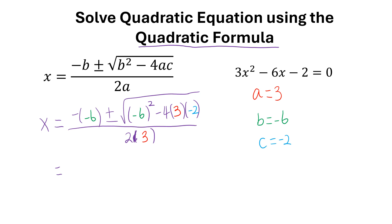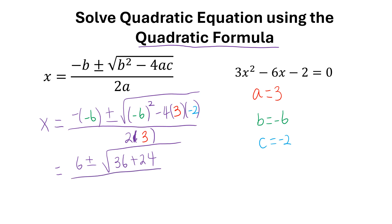Now I'm going to simplify this equation. Negative negative 6 is the same thing as positive 6, plus or minus square root of negative 6 squared, that's positive 36. Negative 4 times 3 is negative 12, times negative 2, so that's positive 24. All over 2 times 3, that's 6.